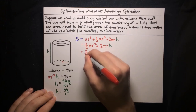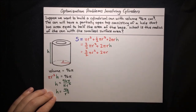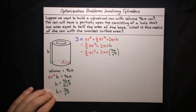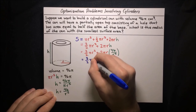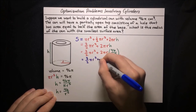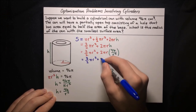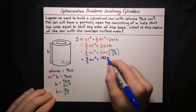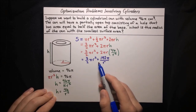Substituting into the surface area function: S equals three-halves pi r squared plus 2 pi r times 96 over r squared. Simplifying: 2 times 96 is 192, and r over r squared is 1 over r. So S equals three-halves pi r squared plus 192 pi over r. Now we have the surface area as a function of a single variable and can optimize it.